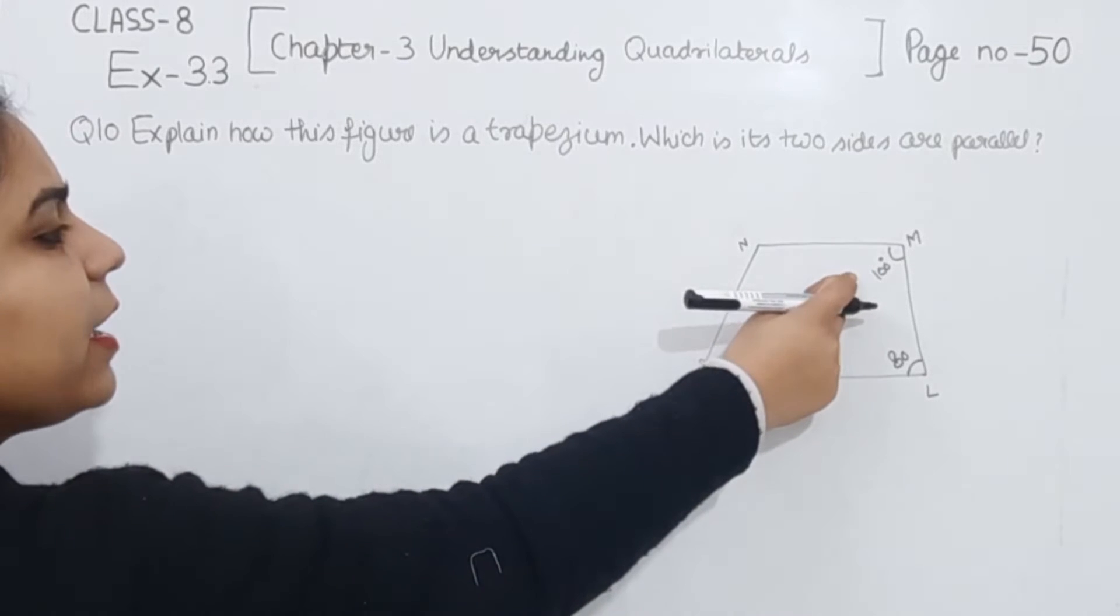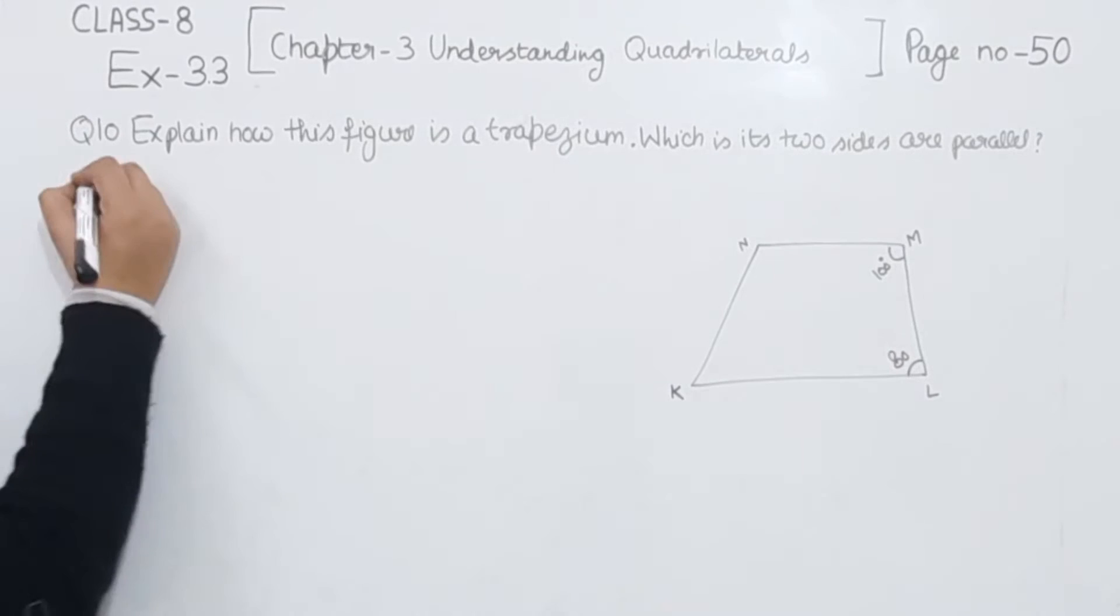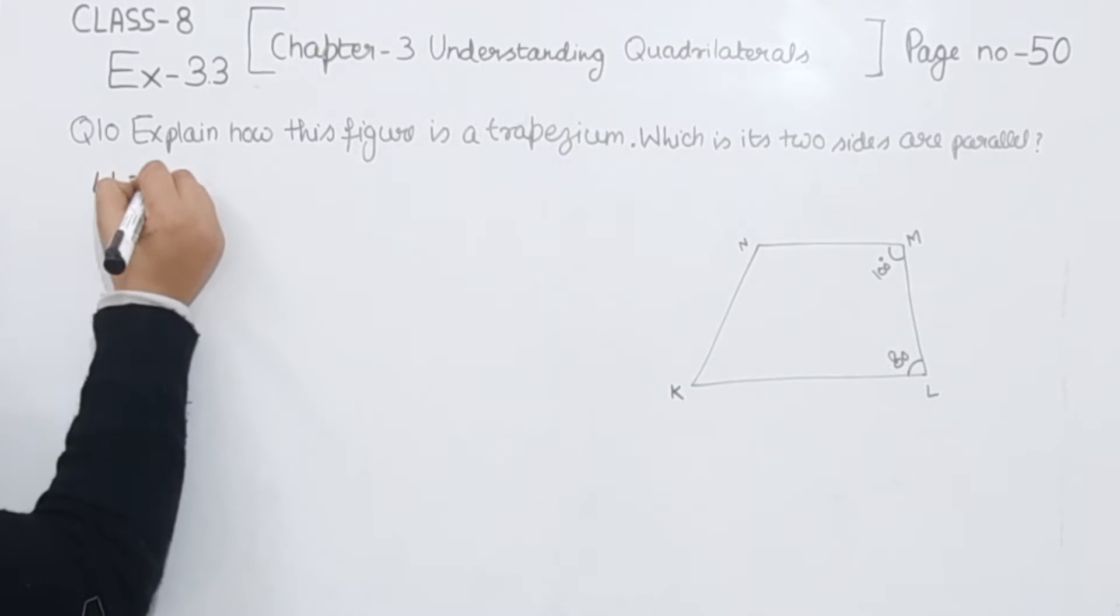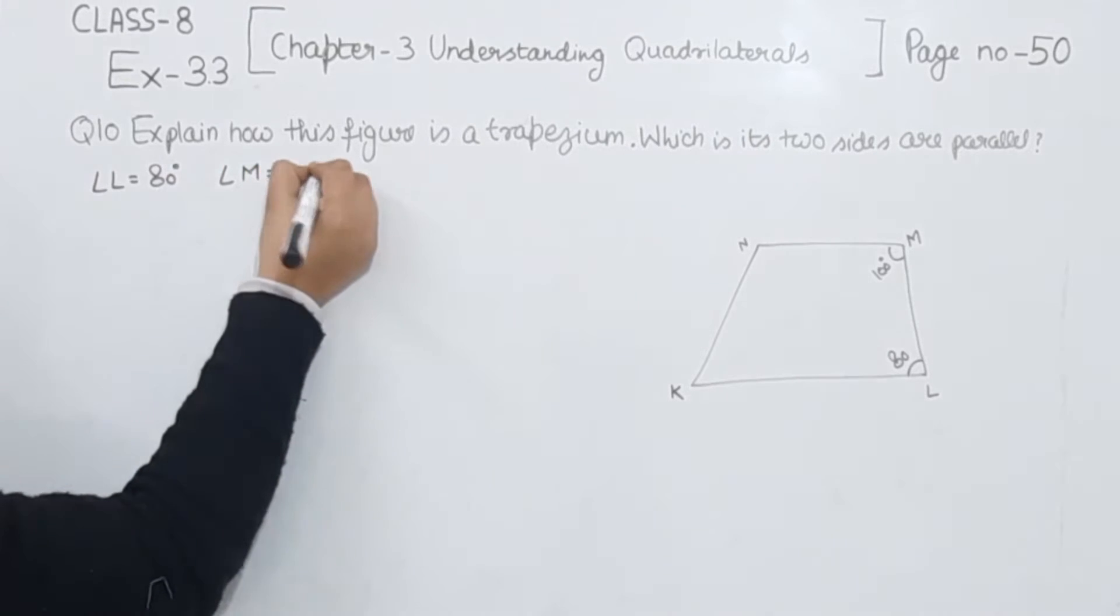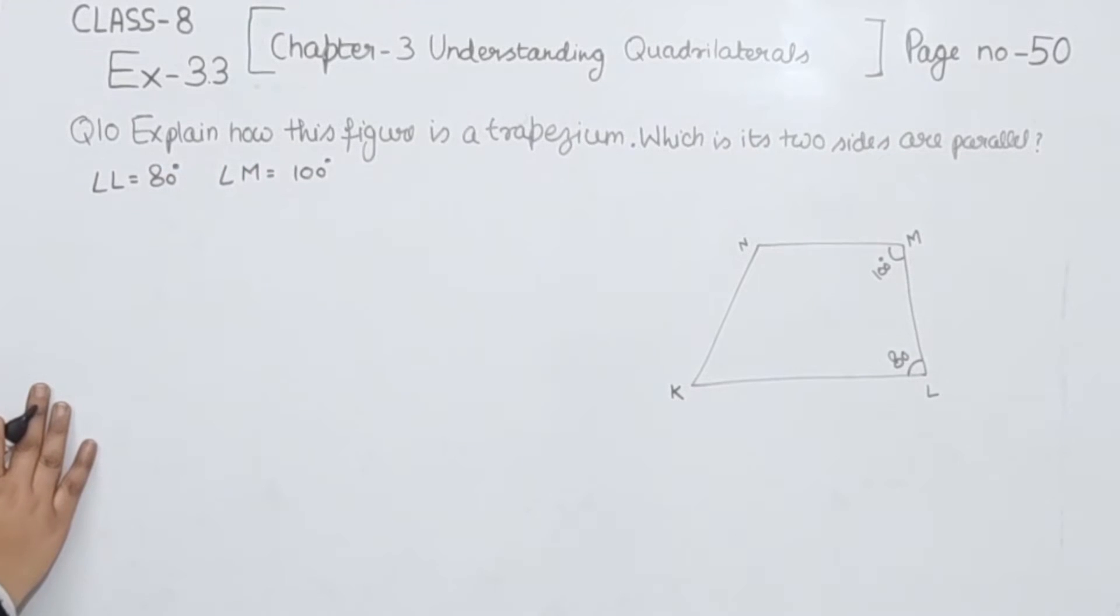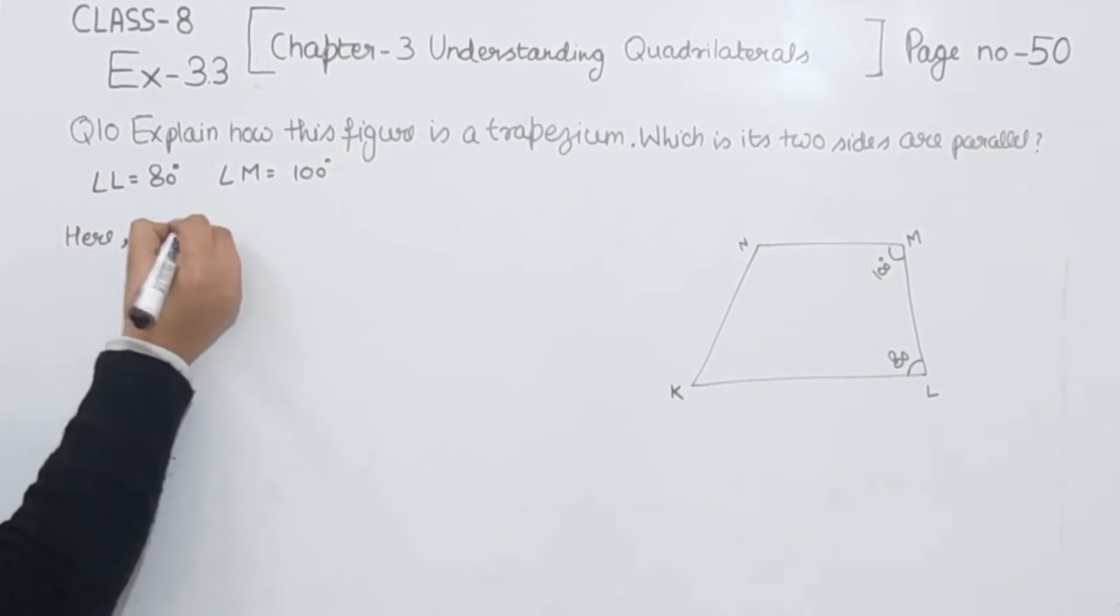And this is the angle we are having as 100 and this is the angle we are having 80 degrees. So we are going to write here angle L is equal to 80 degrees and angle M is equal to 100 degrees.